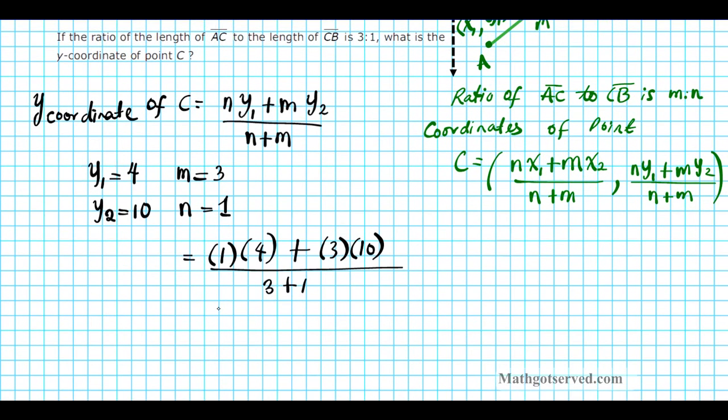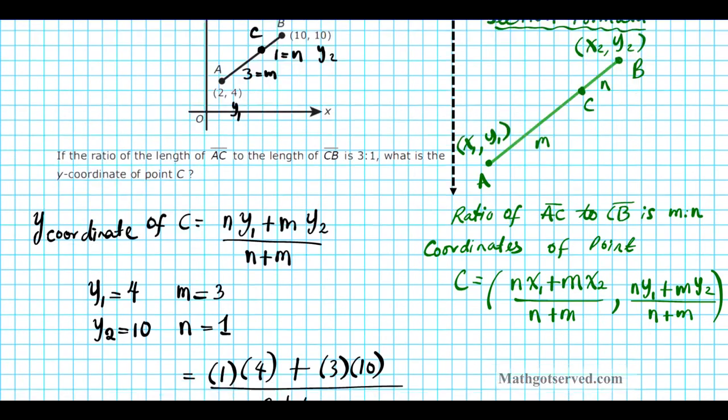So this is what you get when you apply this formula to these values. Let's simplify it using arithmetic. Order of operations, we're going to multiply first before we add or subtract, so 1 times 4 is 4, 3 times 10 is 30, divided by 3 plus 1, which is 4. 30 plus 4 is 34, divided by 4. We can reduce this by dividing the top and bottom by 2, that's the GCF. So we have 17 over 2. In decimal form, this is 8.5. So the Y coordinate of C is 8.5.